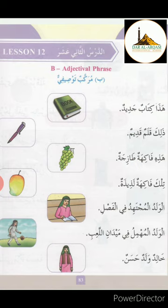Remember: mausuf comes first and then sifat comes. Mausuf and sifat must both follow the same pattern. If mausuf is male, then sifat will also be male. If mausuf is female, then sifat will also be female. If mausuf has alif-lam, then sifat will also have alif-lam. Thank you.